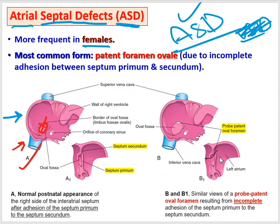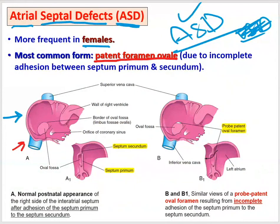Sometimes the foramen ovale stays open — in this case it's small. This is known as patent foramen ovale, meaning it's still open. When it's very small, like a probe size, it usually cannot be noticed and sometimes has no significant clinical effect, so it's just ignored. It usually closes by itself, and even if it persists, it often has no significant effect.